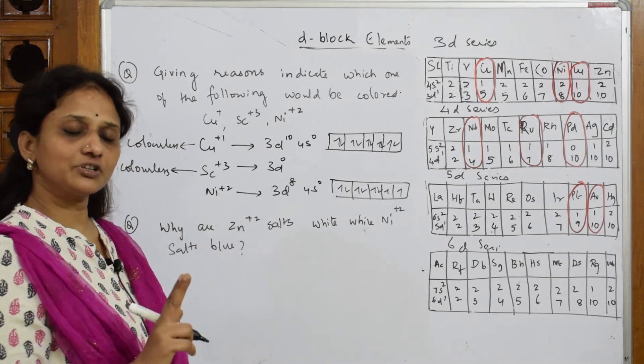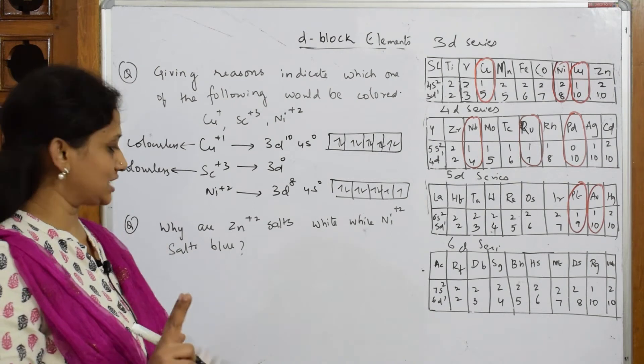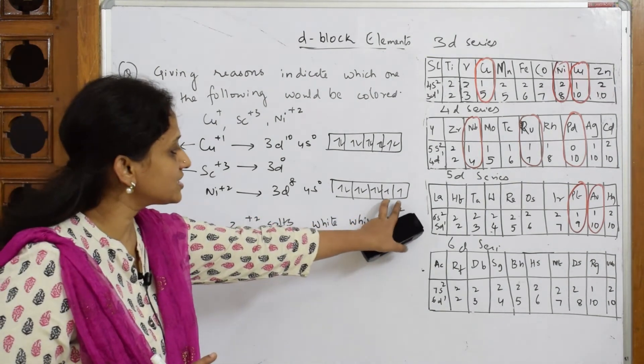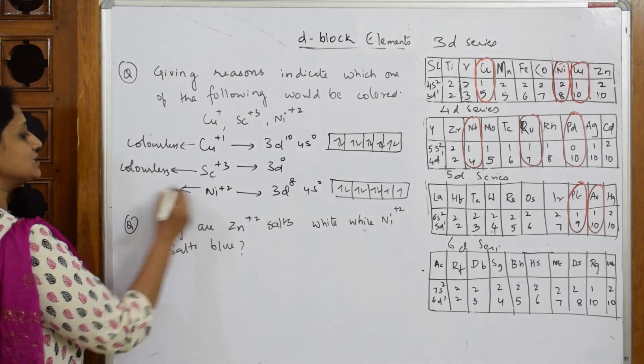After showing d-d transition it will show color. I'll explain what is d-d transition in this question. So because of this unpaired electron, this is colored.